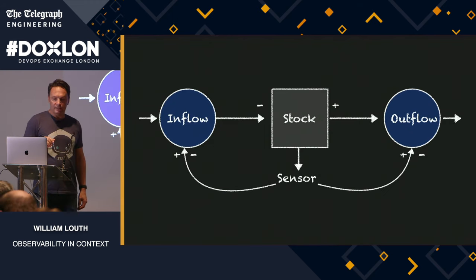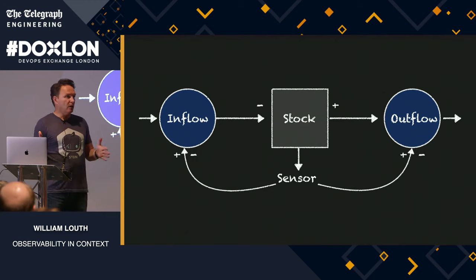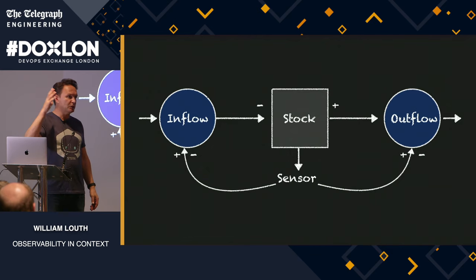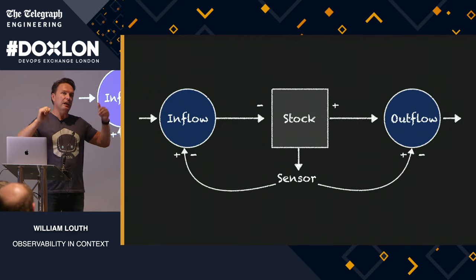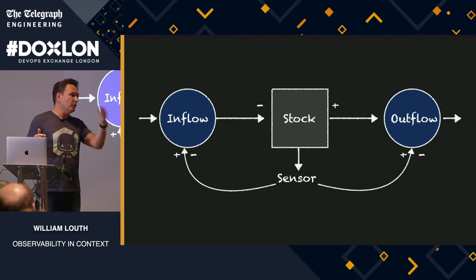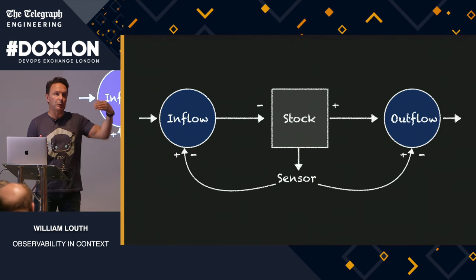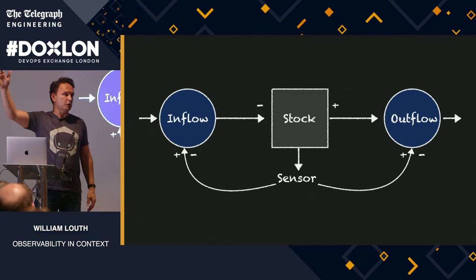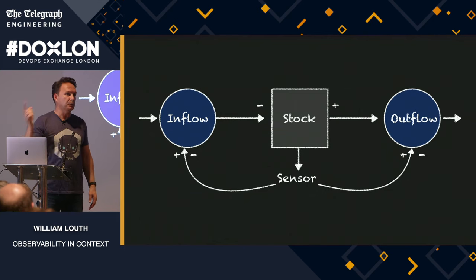In systems thinking, we have this concept of inflow and outflow — it's very like control theory. Systems thinking is about: you have a stock, which is like your capacity in your network, your capacity in your pods, your Kubernetes, or your capacity in the number of threads in your pool. Inflow is where requests come in and take away from the stock, and the outflow returns it when the request is over.